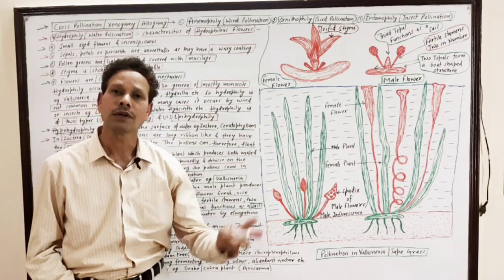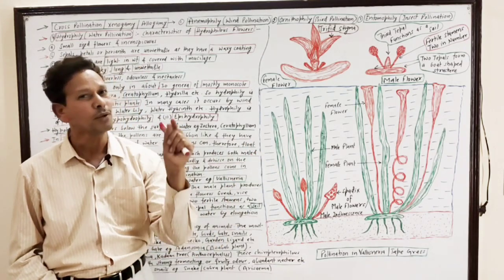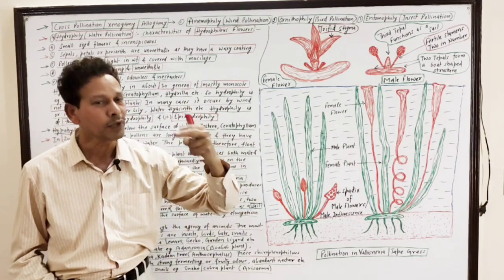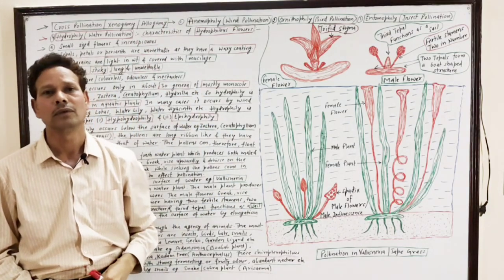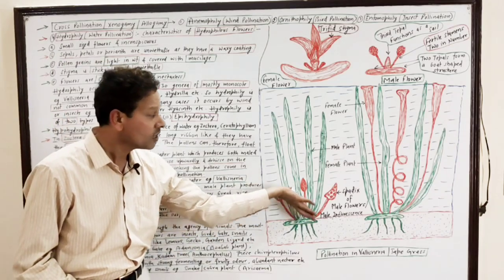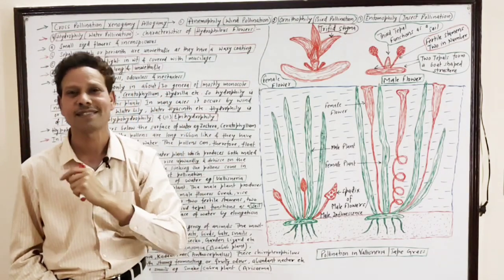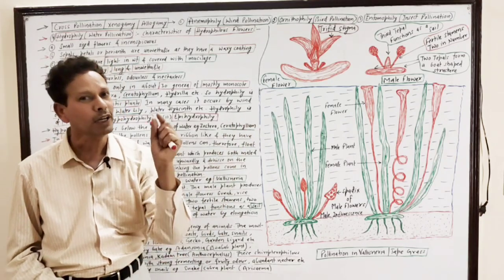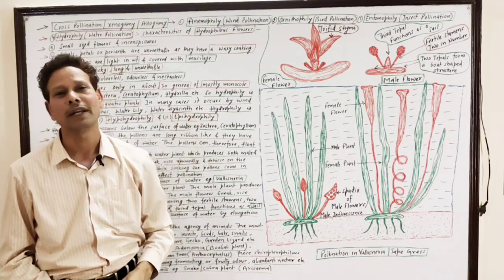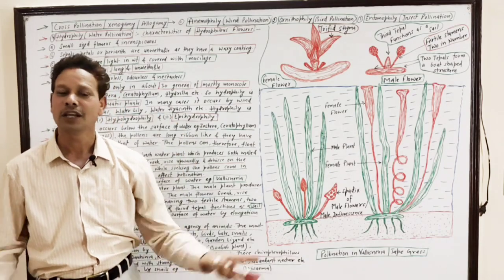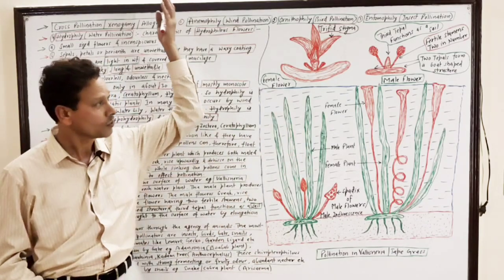This is all about different modes of cross-pollination. Pollination by wind is anemophily. Pollination by water is hydrophily, which has two types: hypohydrophily (pollination occurs inside the water body) and epihydrophily (pollination occurs over the surface of water). Pollination by birds is ornithophily. Pollination by snails and mollusks is malacophily. Pollination by insects is entomophily. Pollination by bats is chiropterophily. Pollination by different animal agents is zoophily. This is all about pollination.